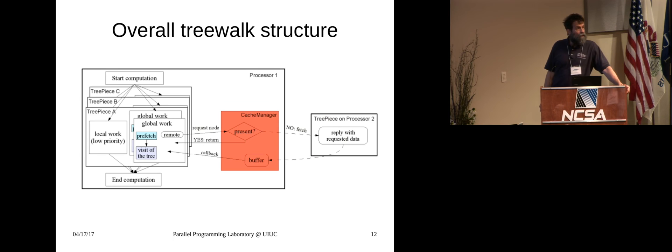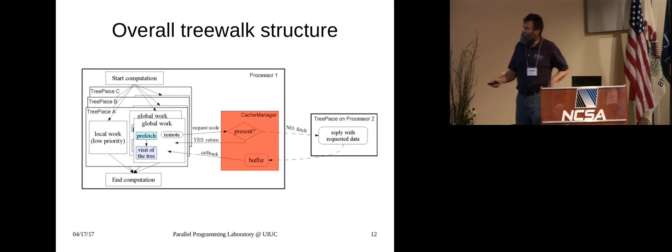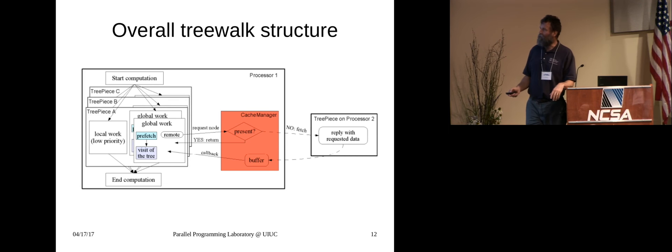In the charm fashion, we distribute these tree pieces across our machine with multiple tree pieces on a physical processor. But furthermore, within a tree piece, we divide up the work into subunits. We have local work, which only depends on the data that's on the tree piece. But then we also have global work where we're looking for gravitational forces from other tree pieces. And, of course, this involves communication to other processors. When we ask for data from another processor, we cache it. But while all this is going on, we can fill in the communication with this local work.